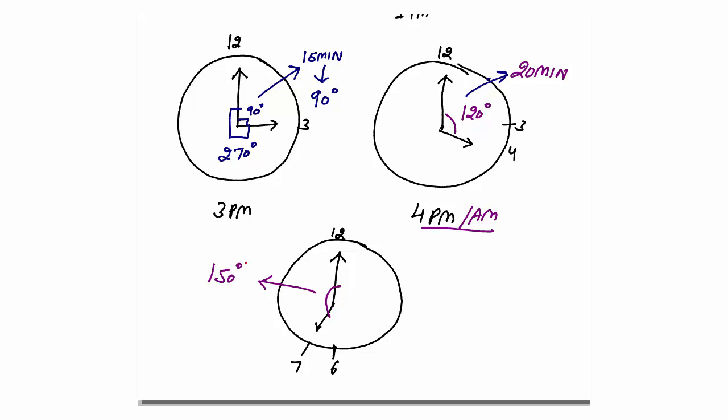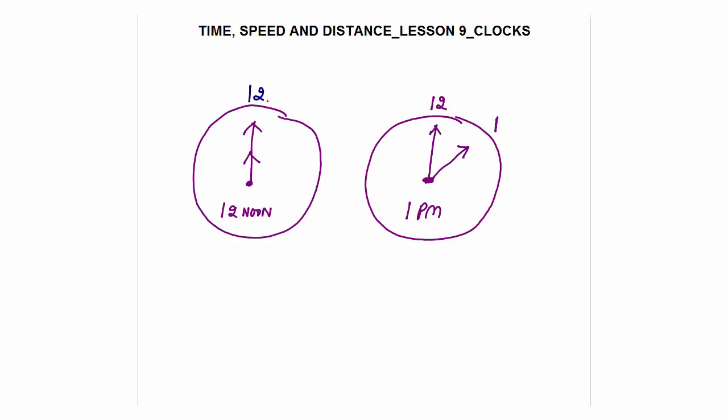In this slide I have shown you the angle between the hands of the clock at standard times — at fixed times like 3 o'clock, 4 o'clock, and so on. In the next slides we will discuss the angle at non-standard times such as 3:45, 3:40, 4:40, and so on.